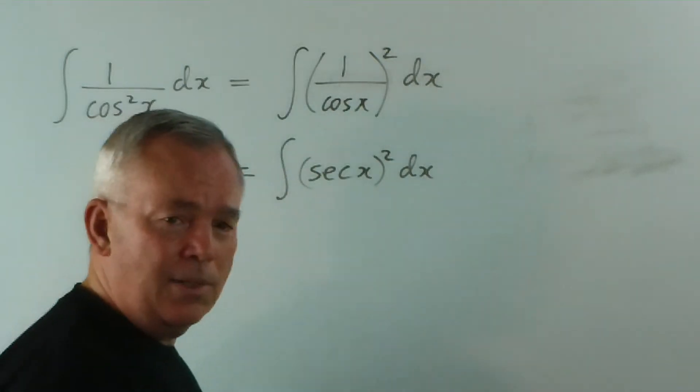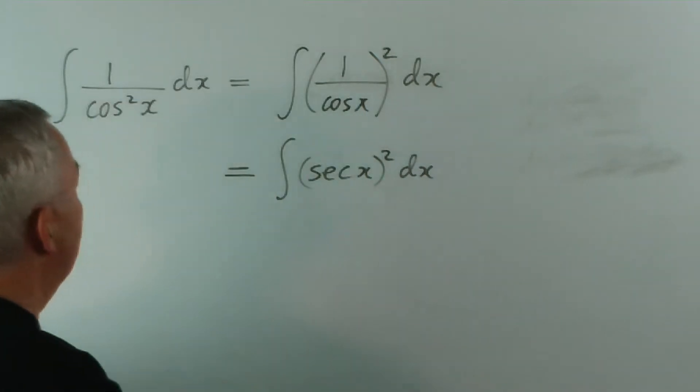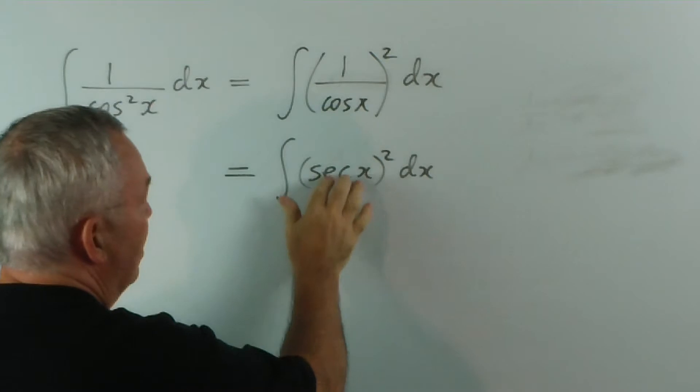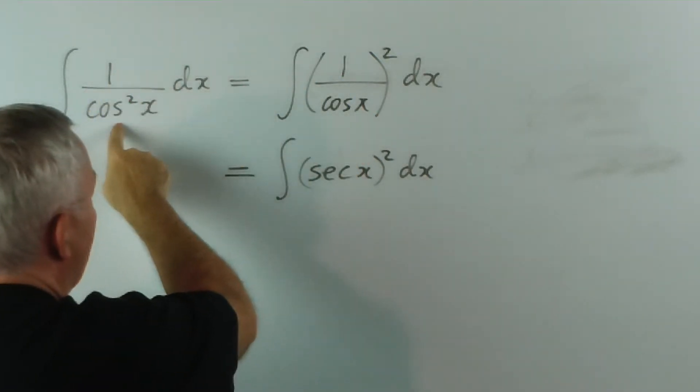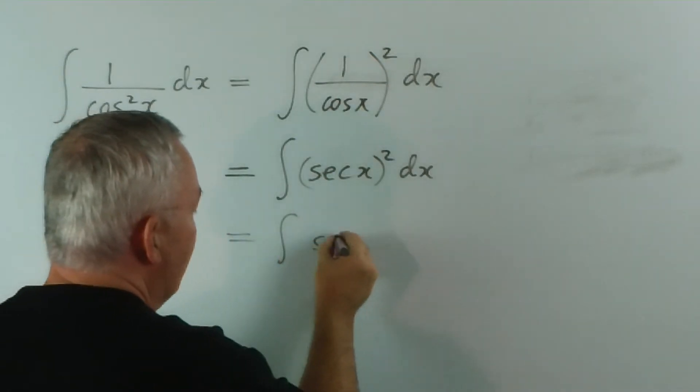In New South Wales, Australia, we learn this ratio in year 9 or year 10, so it's mid-high school.